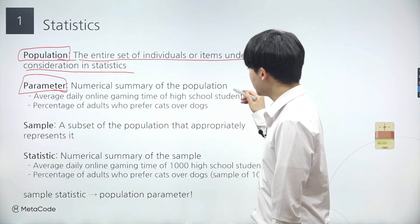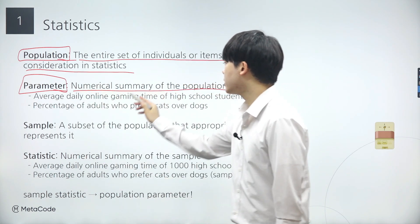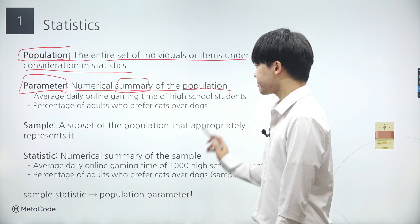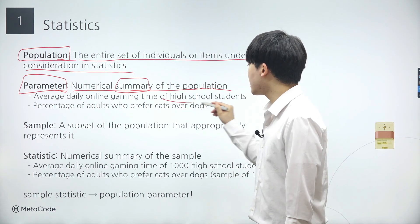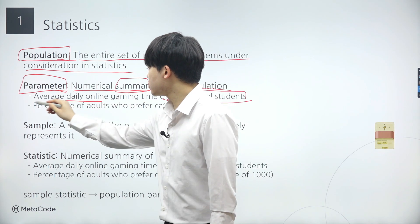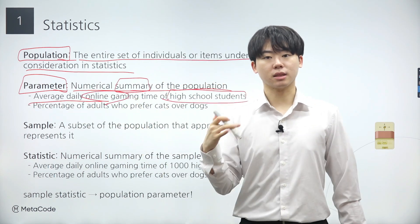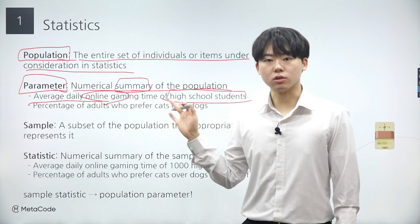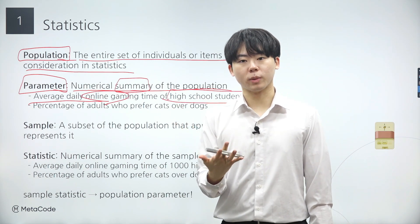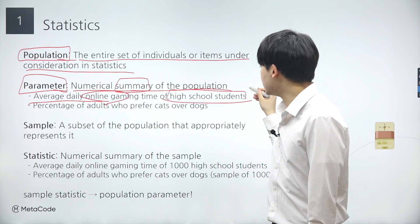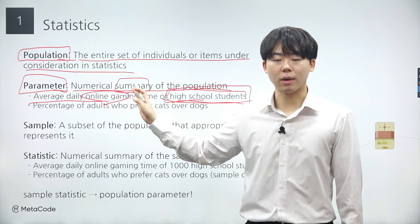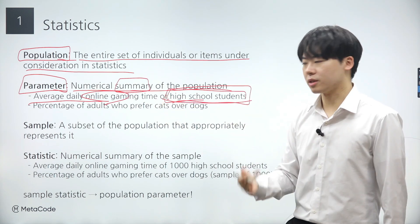Parameters are key values that summarize important features of the entire population being studied. They provide essential information about the distribution, variability, and other properties of the population. For instance, the average online gaming time of high school students serves as a parameter, where high school students represents the population, and the average daily online gaming time represents a numerical summary of their population's behavior. Parameters are the numerical summary of a population.